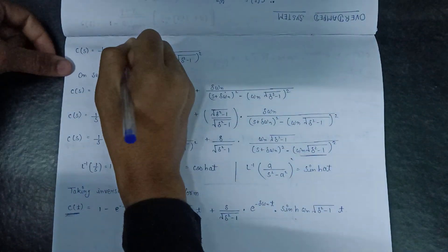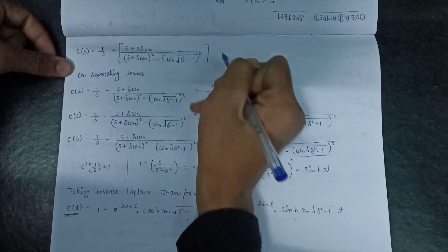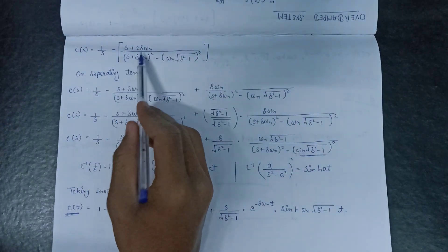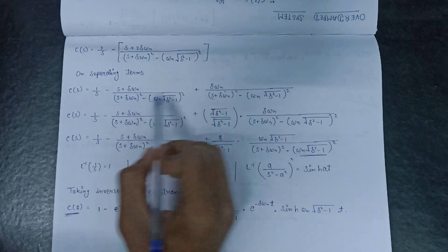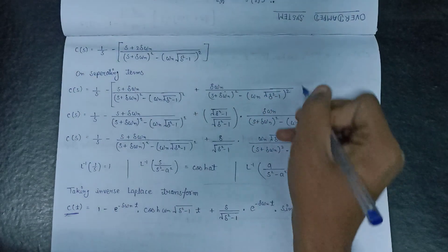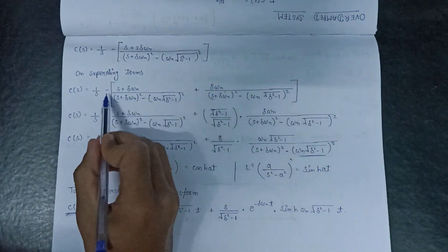So now we have to put a square bracket here, and since we are separating out this 2 delta omega_n as delta omega_n plus delta omega_n, that's why we have also put a square bracket here so that